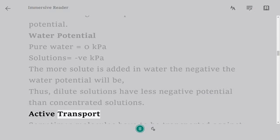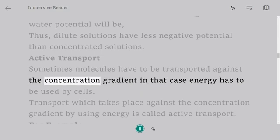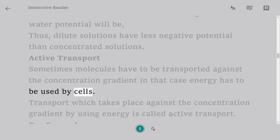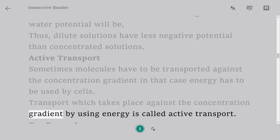Active transport: Sometimes molecules have to be transported against the concentration gradient; in that case energy has to be used by cells. Transport which takes place against the concentration gradient by using energy is called active transport.